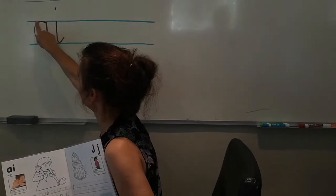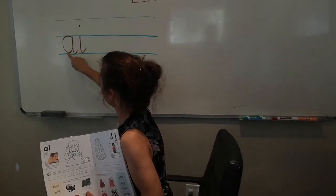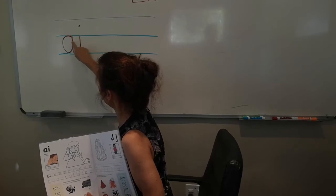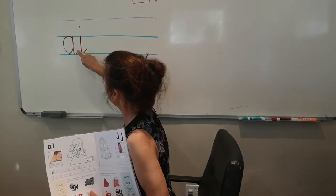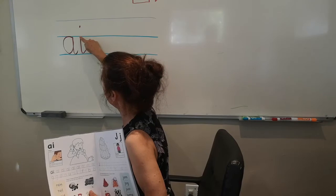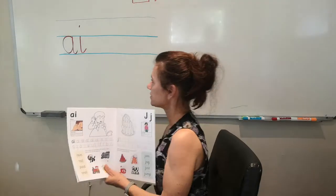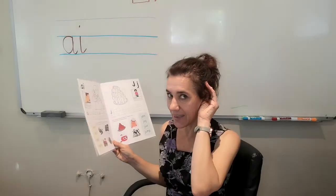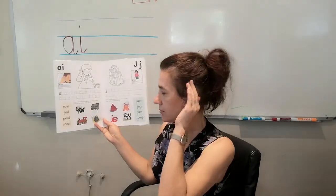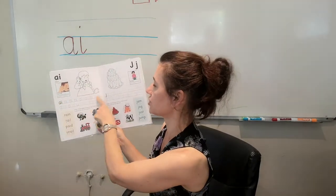AI, you start here. Nice fat tummy down, up to this line and down and a little tail. And the I, a little tail and the dot. So that is your AI sound. Good, and you finish these two lines.